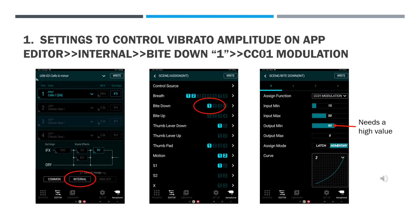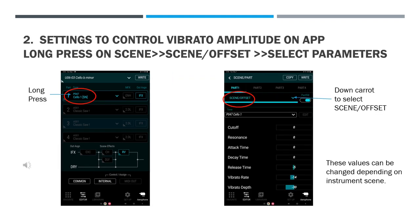Open the Aerophone app and choose the scene you want to modify. Once in the app, go to the editor and click Internal — a new menu will pop up. In the new menu, go to Byte Down and select the sideways carrot; another menu will pop up. For the first setting, set the assign function to CC01 modulation. Go back to the editor menu. The next step is to do a long press on the scene name, which will bring up another menu. Click on the down carrot to the right and select Scene Offset from the list.